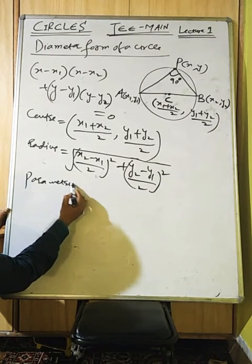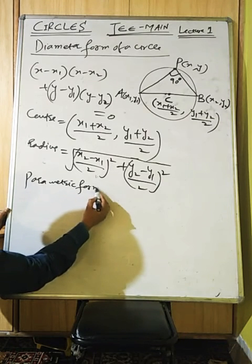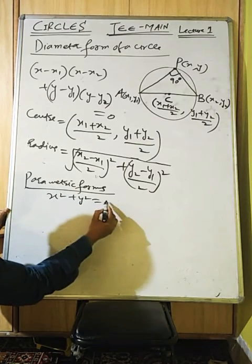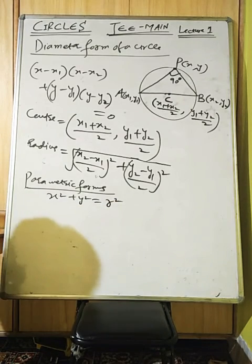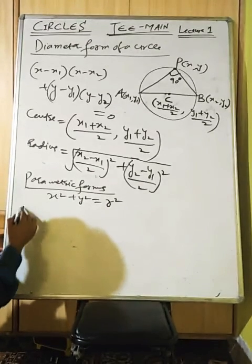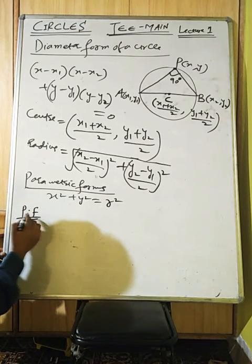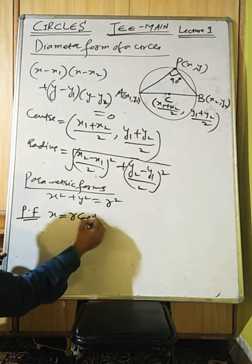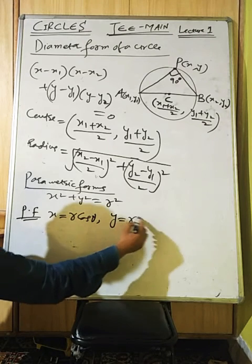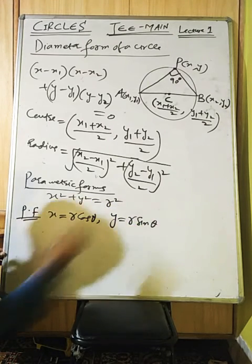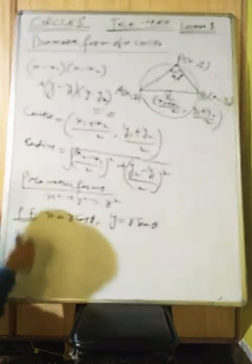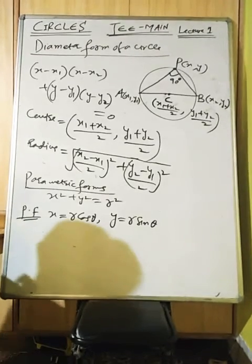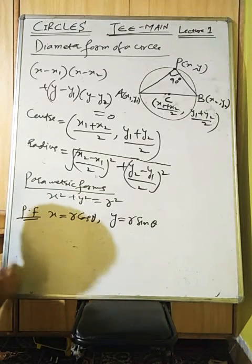Now parametric form. For x² + y² = r², the parametric form is x = r·cosθ, y = r·sinθ. Here x and y are functions of another variable θ — this is called the parametric form, similar to what we do in complex numbers.